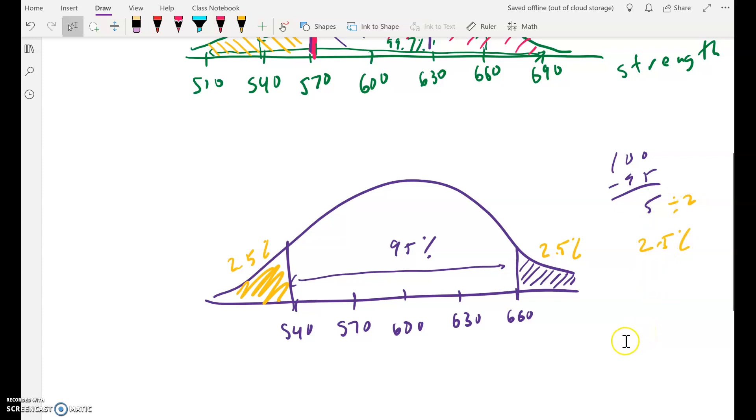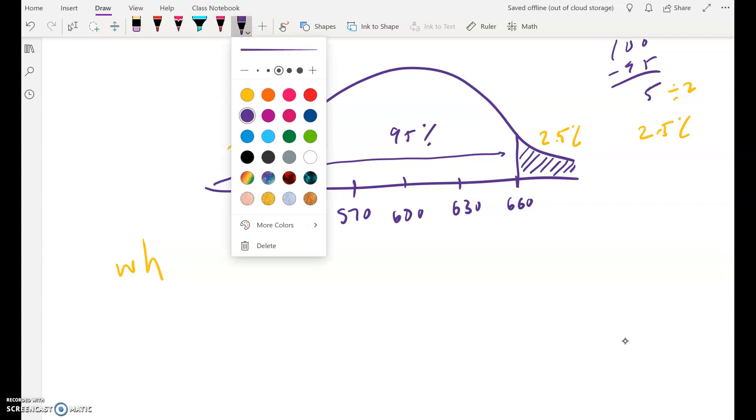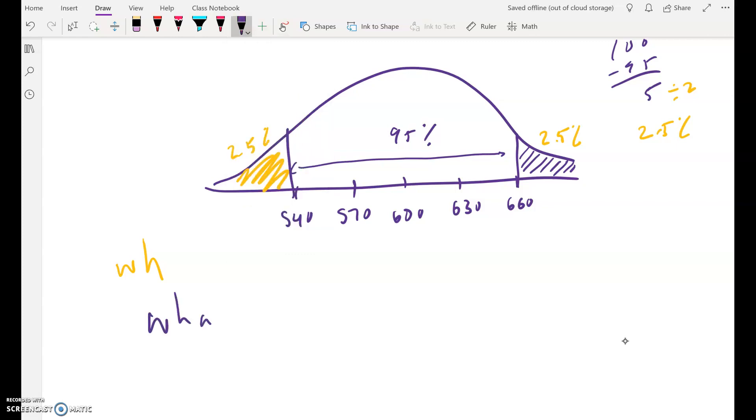Okay, but now to answer the question. So the question is, what percent, let me switch to another color here. So here we go. So let's do purple here. So what percent of the rivets are, I'll just say weaker. And the question that said fall below, but that's the same as saying weaker, weaker than, sorry about my messy handwriting, weaker than 660 pounds.